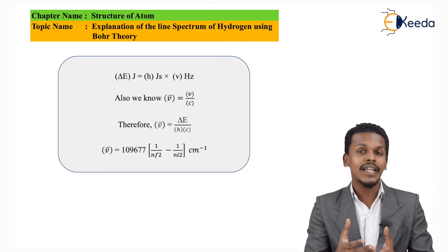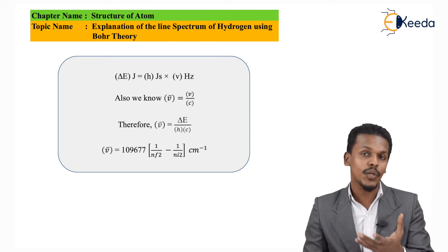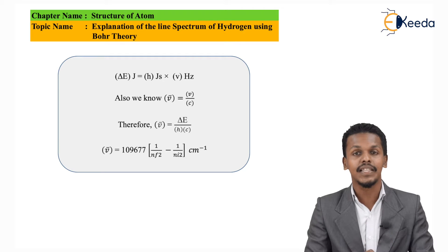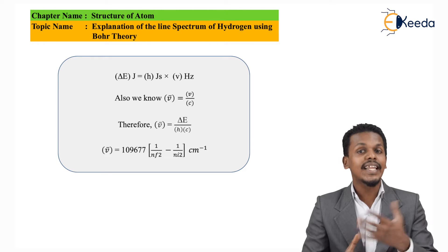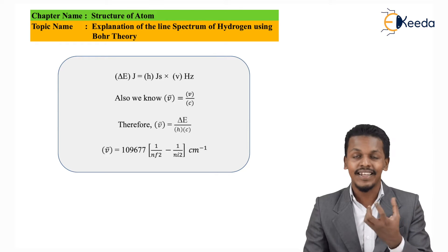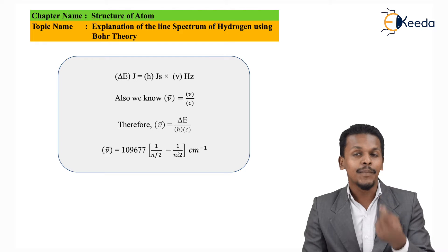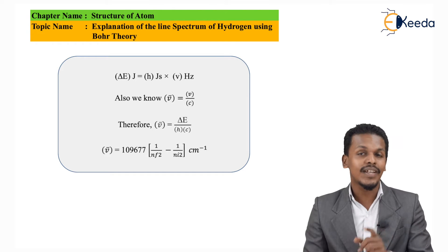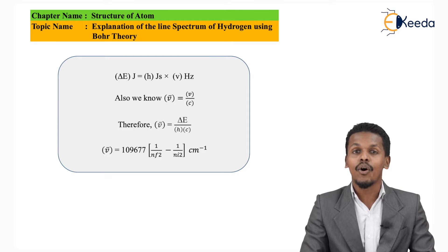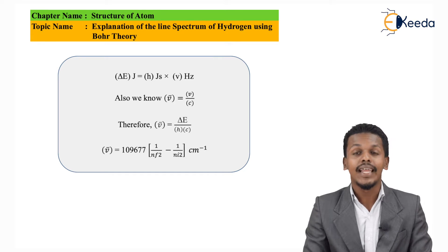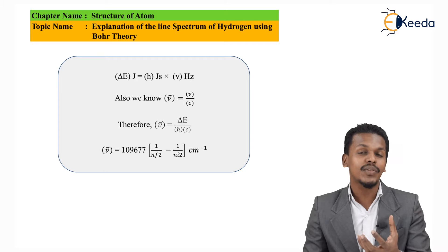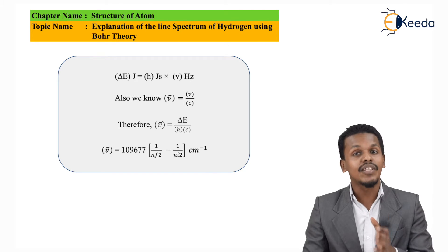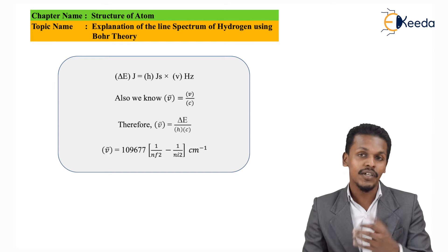The wave number is the ratio of frequency to the speed of light C, which is 3.0 × 10⁸ m/s or 3.0 × 10¹⁰ cm/s. From this we get the equation: wave number (ν̄) = 109677 × (1/Nf² − 1/Ni²) in cm⁻¹. This equation is very similar to the Rydberg equation, where 109677 cm⁻¹ is known as Rydberg's constant.